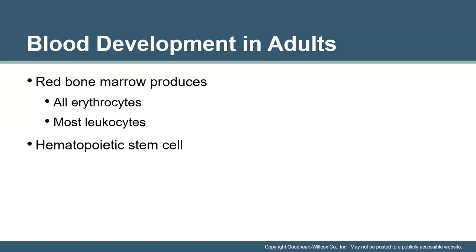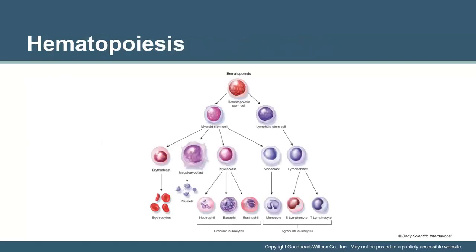In adults, the red bone marrow produces all erythrocytes and most leukocytes, all derived from that hemopoietic stem cell. The health of your bones is super relevant for the health of your immune system — what gets inspired to be produced, the health of your immune system, and the resources available to build these cells are all interconnected. It's a feedback loop — the bone marrow and immune system talk to each other and stimulate one another.